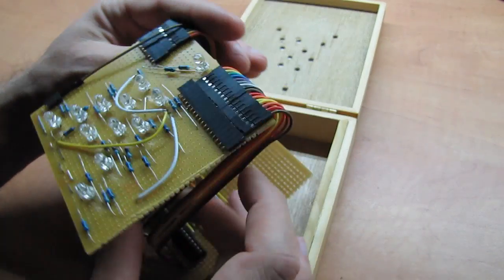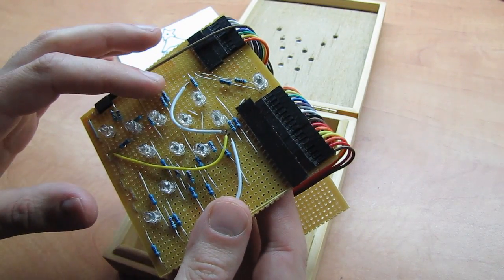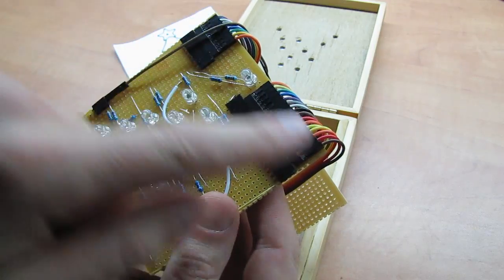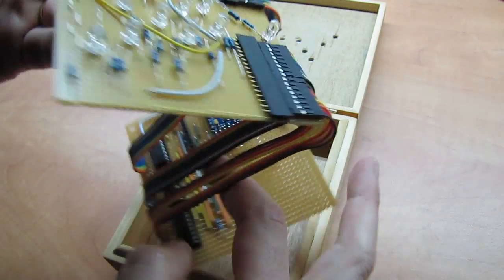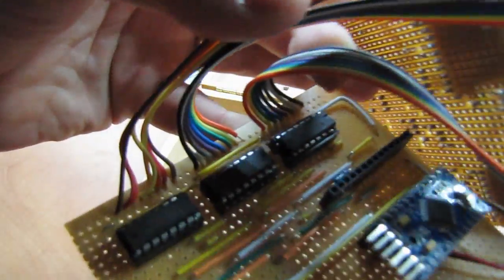And there are 12 LEDs here. Each has two inputs and one ground, so that's 24 inputs all in all. And they go right into three 595 shift registers. There they are.